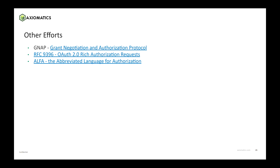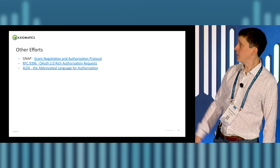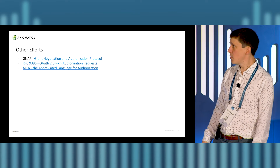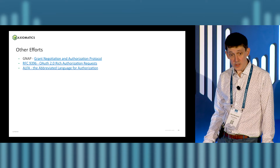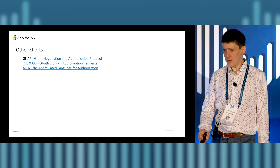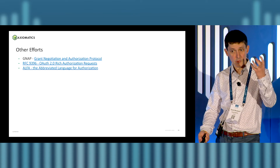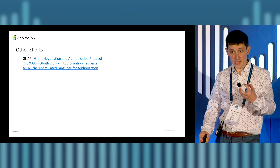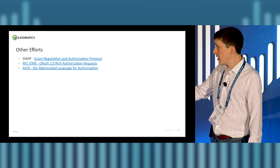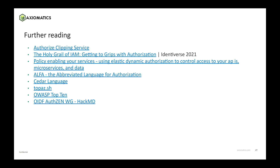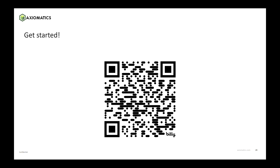A few other efforts happening: there's GNAP, which is around authorization based on OAuth; there's rich authorization requests, which Curity supports within the product — a predefined way of calling out to an authorization service from within the identity server; and then Alpha as well, which I already mentioned. And then a bunch of other articles for your own reference. I think that is it, with one minute and 45 seconds to spare.